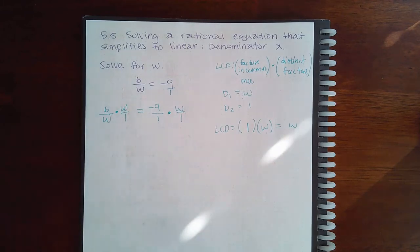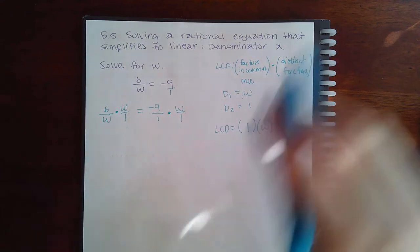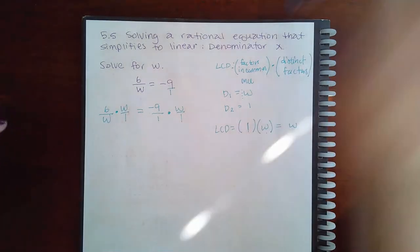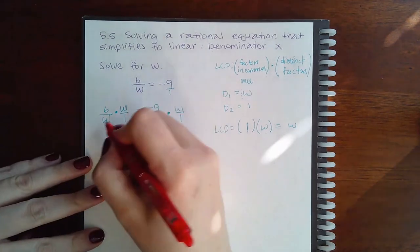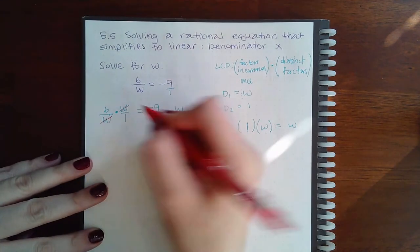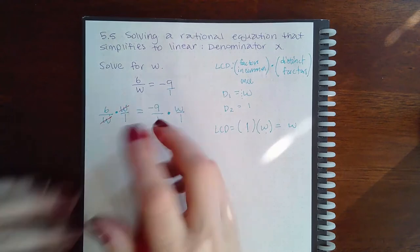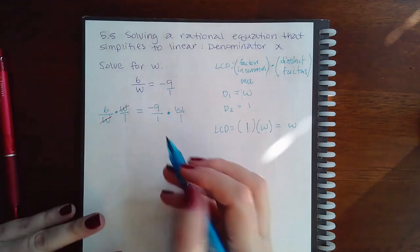You do have to reduce, and you have to multiply. So I like to reduce first just because it makes what I'm going to multiply a little less. So I notice that the w here and the w here can reduce. Here nothing can really reduce. You're already down to 1s, which is as low as they go.